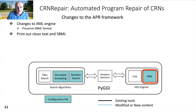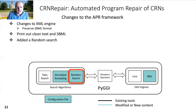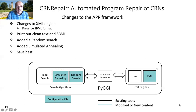Secondly, Piggy prints clean text output, but ChemTest uses SBML input. This is normally a small change, unless we need to track our mutations over the SBML file. For comparison purposes, we added a random search. We also added simulated annealing linked to the tabu search so that it can escape from local optima and search new areas. Finally, when the target fitness is reached in an epoch, we save the best result in SBML and clean text formats.